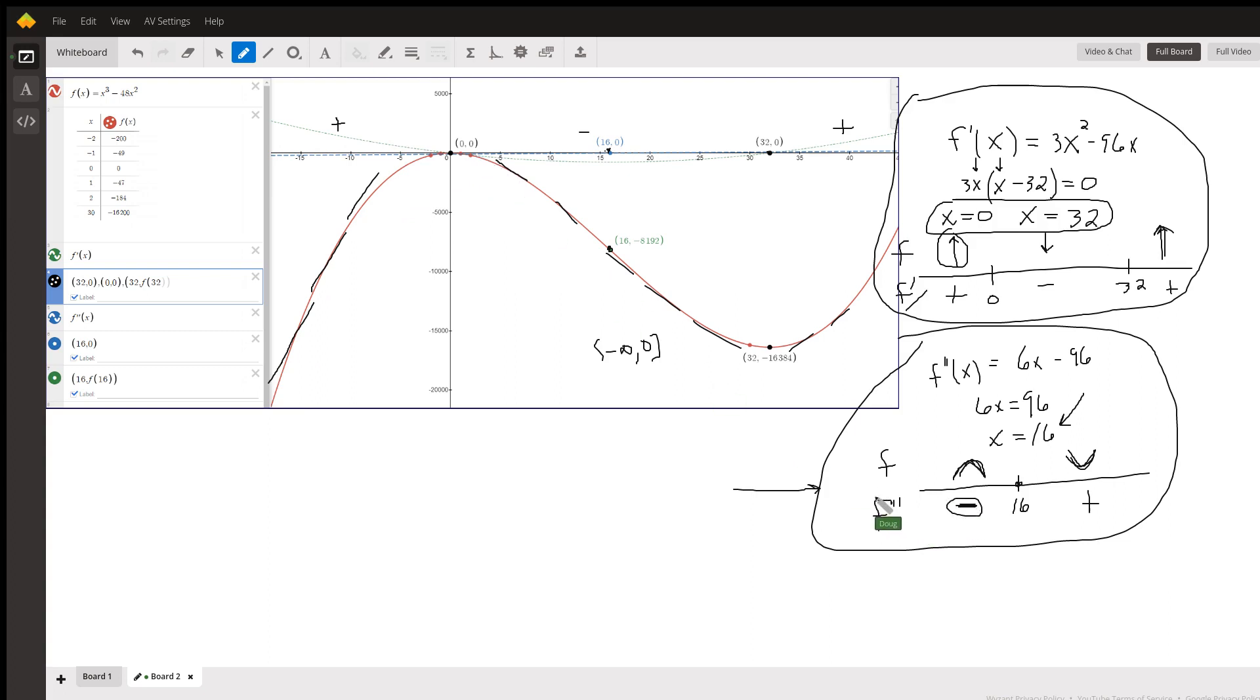That means the tangent lines are decreasing in slope. They're going from positive to negative. And then all of a sudden, at 16, they start increasing in slope. We call that concave up.